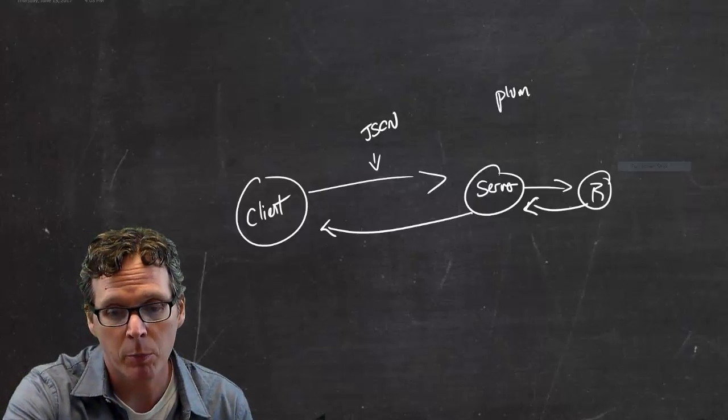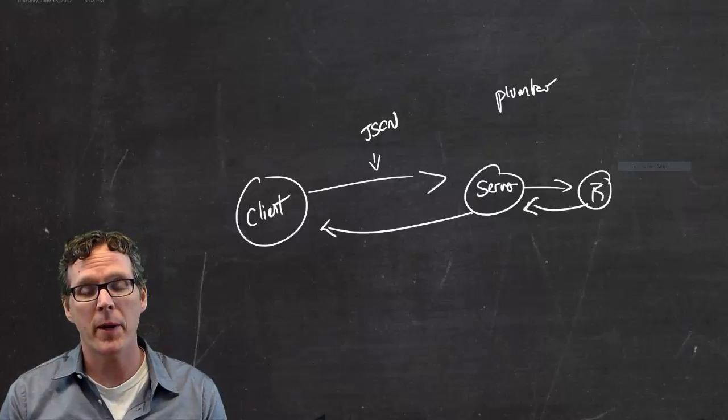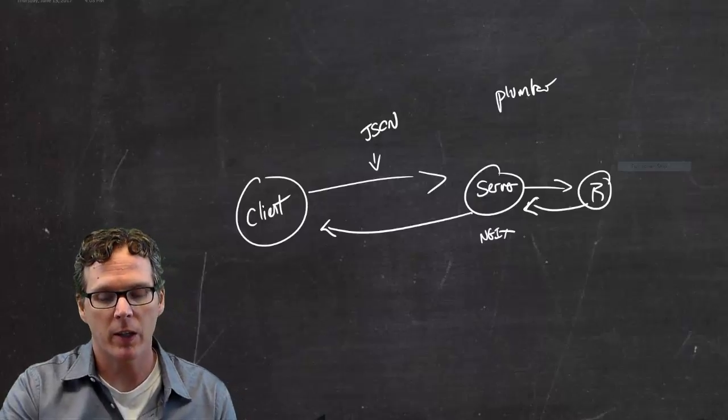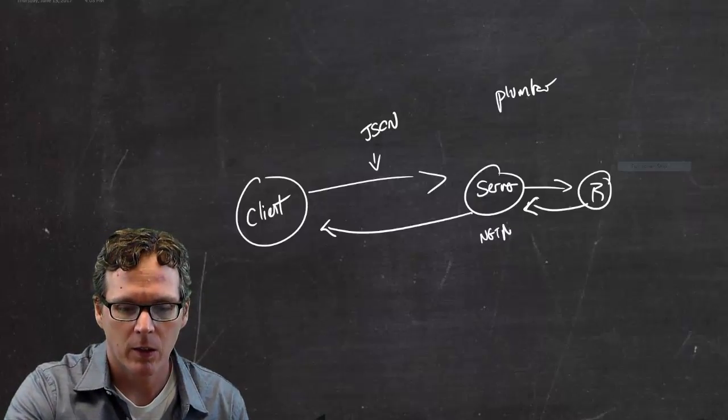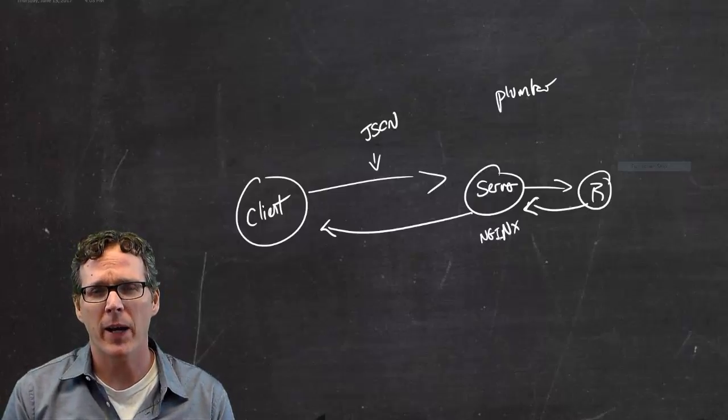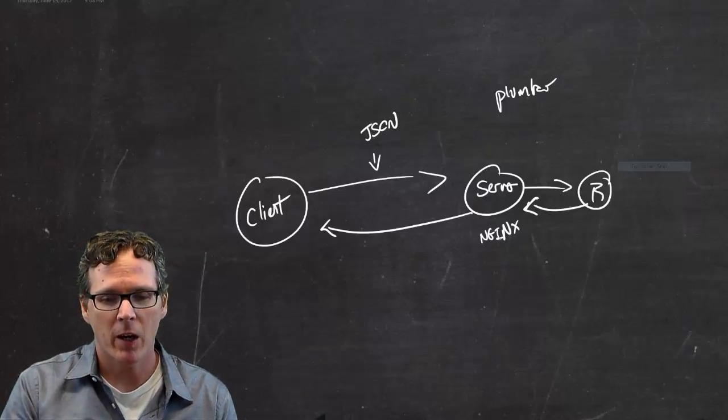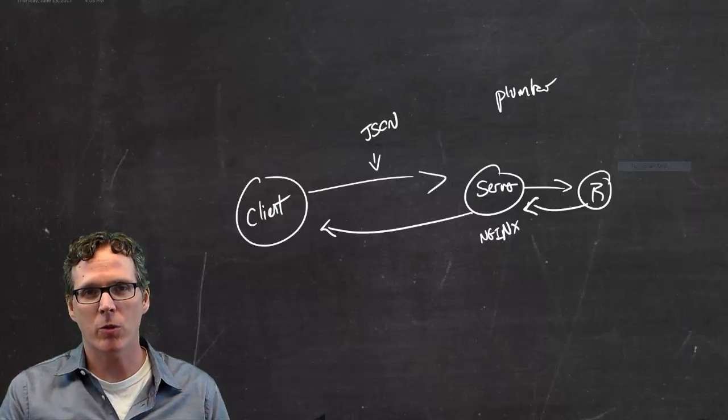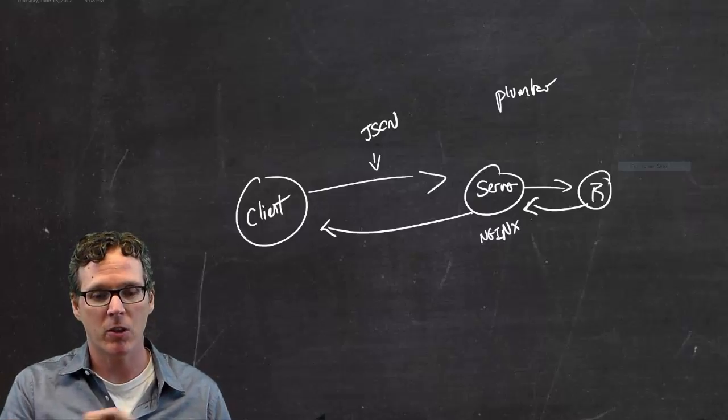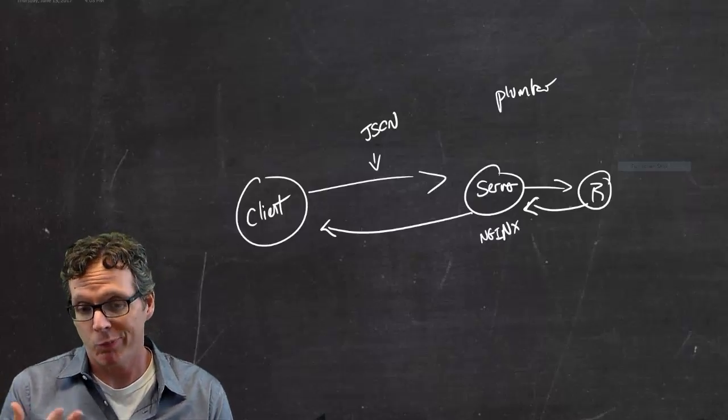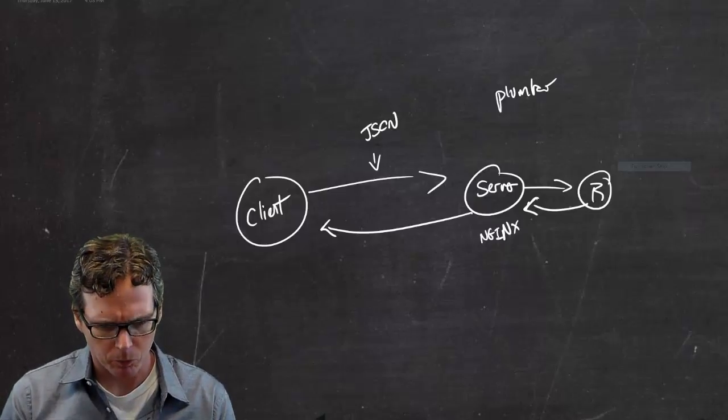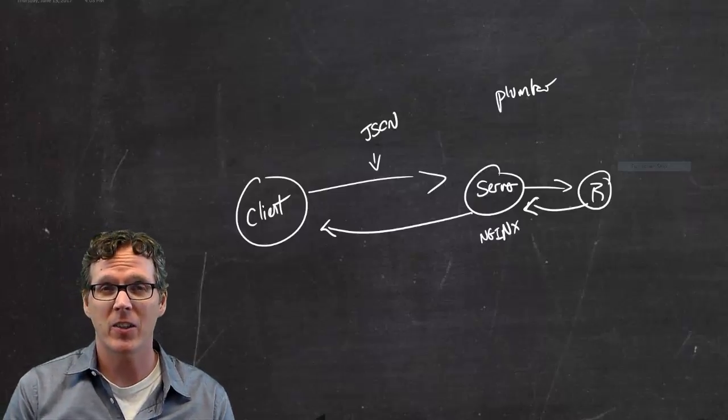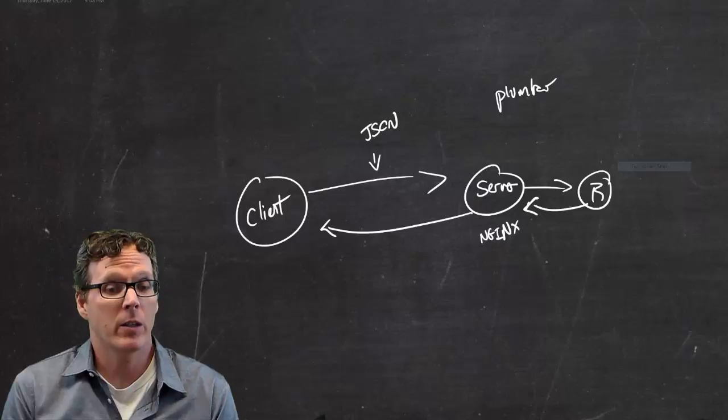So anyway, what I used for this is we've been using Plumber, which is an R package. And what Plumber basically does is it uses Nginx, which is basically like an Apache server. And Plumber creates the infrastructure for creating R applications that Nginx can call when it receives the information from HTTPS. So Plumber is one solution. That's the one I'm using. And that's the one I know. And I can't really critically evaluate it against other things because it's the only one I've tried. And it's pretty easy.